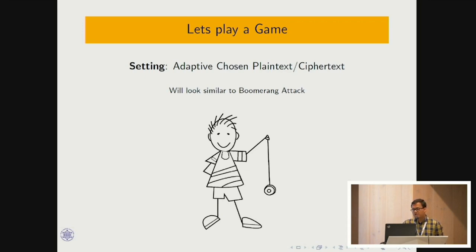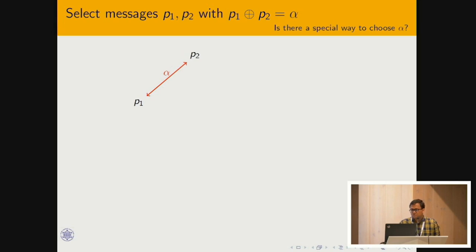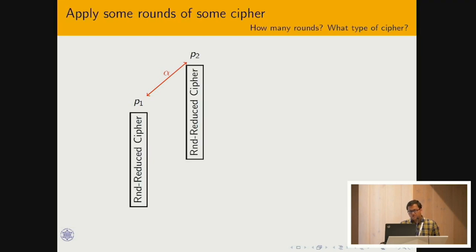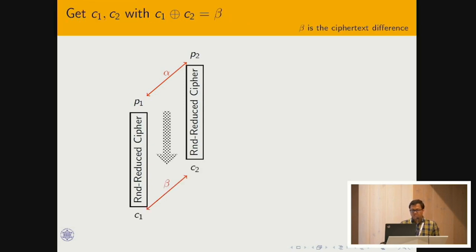Our distinguisher works in the adaptive chosen plaintext and ciphertext setting, and the attacks look quite similar to boomerang attacks. We choose two plaintexts with some difference alpha — there are special ways to choose alpha which we discuss later — and we use round-reduced ciphers to encrypt them and get a new pair of ciphertexts C1, C2 with difference beta.